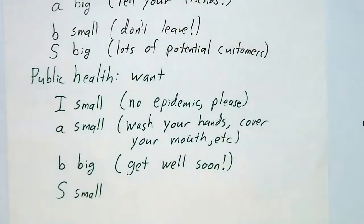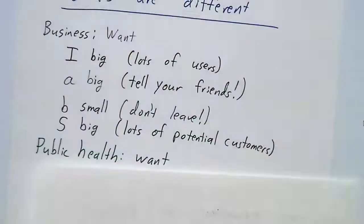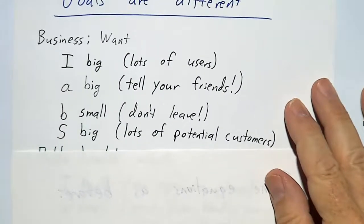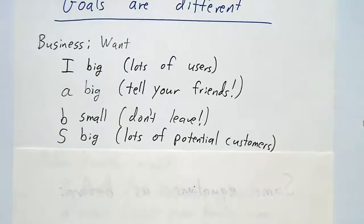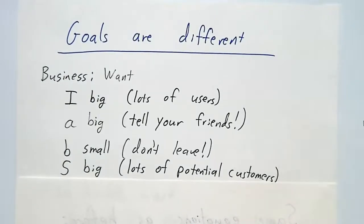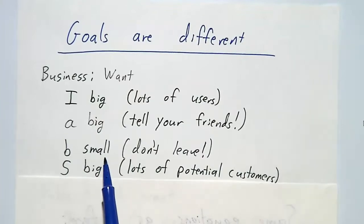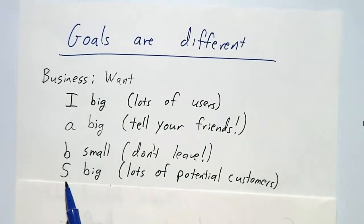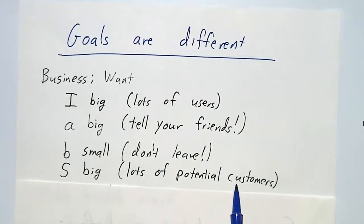So what's the difference? The difference is in our goals. If you're doing business, you want I to be as big as possible - those are your users. And you do that by getting A to be as big as possible. Transmission is good. You want all of your users to tell their friends. And you want B to be as small as possible, because once somebody is using your product, you don't want them to leave. And you'd like S to be as big as possible, so you have lots of potential customers.